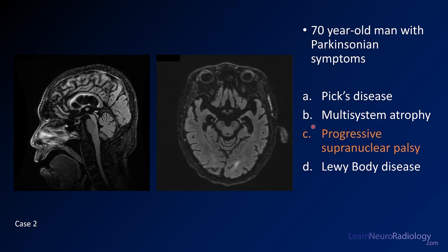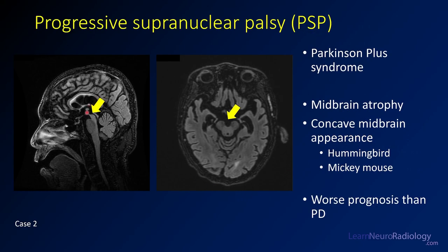This is a case of PSP, or progressive supranuclear palsy. What you can see here is abnormal concavity of the upper border of the midbrain — the so-called hummingbird sign — from loss of volume in the midbrain. On axial images, this appears as widening of the interpeduncular cistern, giving the midbrain a Mickey Mouse appearance. PSP is a Parkinson's plus syndrome with a worse prognosis than Parkinson's disease. It doesn't respond to medications, deep brain stimulation, or other treatments.